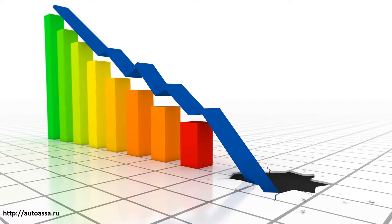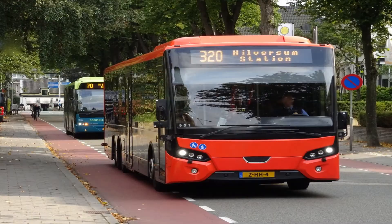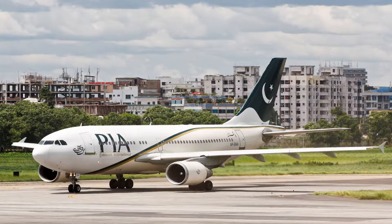When income rises, demand falls for inferior goods as consumers switch to better quality alternatives. For example, intercity bus transport is an inferior good. As income increases, people will prefer air travel rather than buses, so with an increase in income, demand will decrease.